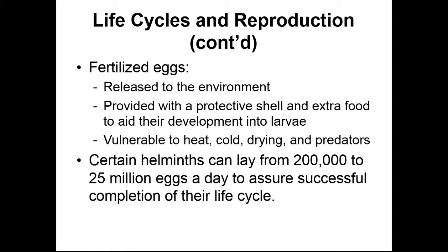Going back to those life cycles — the fertilized eggs produced by helminths need to be released into the environment. Since they're being released outside of the host, they usually have a protective shell and some food stores to help them reach the larval state and get to the intermediate host. These eggs are vulnerable to heat, cold, drying, and predators, so they need to find an intermediate host quickly. Certain species of helminths can lay 200,000 to 25 million eggs a day, so obviously most of these eggs never make it — but if just 1% make it, that's still a very high success rate.